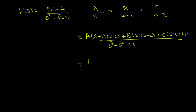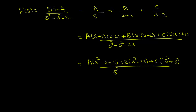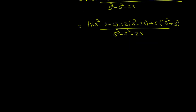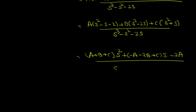Expanding, this is A times (s squared minus s minus 2) plus B times (s squared minus 2s) plus C times (s squared plus s), divided by s cubed minus s squared minus 2s. Writing the numerator as a polynomial in s, we have (A plus B plus C) times s squared, plus (minus A minus 2B plus C) times s, minus 2A.